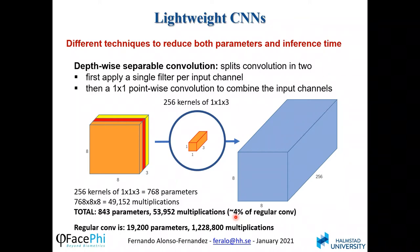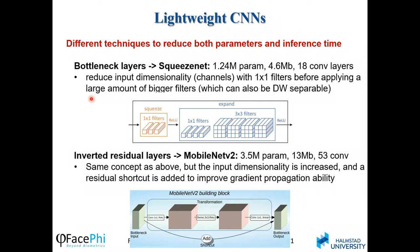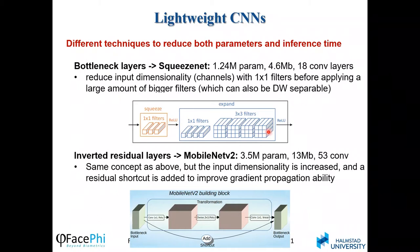Based on these two techniques, there are more elaborated architectures. One is the bottleneck layer used by SqueezeNet, which reduces input dimensionality using 1×1 filters, then applies a large number of filters — here represented by eight filters — to the reduced dimensionality. Some of these filters are larger, 3×3, which can also be depthwise separable for increased speed and reduced parameters. The concept is to reduce the number of channels and then apply many filters to this input with reduced dimensionality.